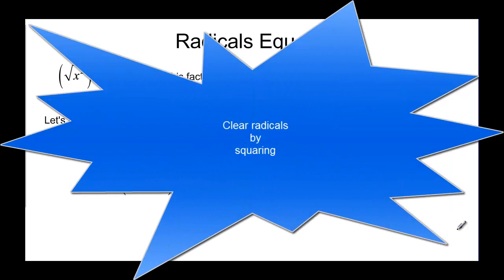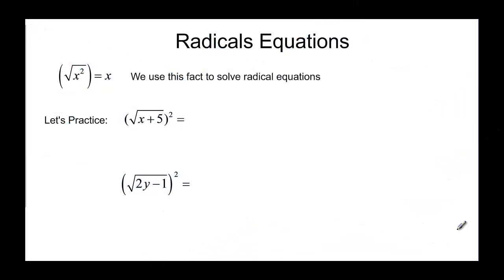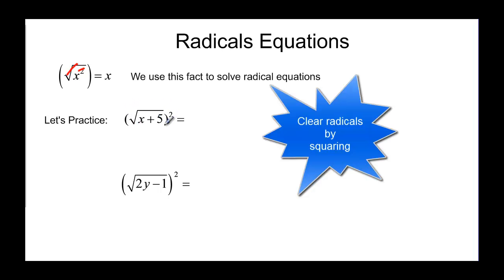This video will talk about solving radical equations. When we were solving quadratic equations, we had an x squared and we took the square root of both sides — the square and the square root canceled each other out and gave us an x. Now we're going to start out with the square root and we want to get rid of it, so we square both sides.